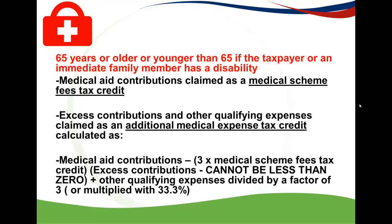Remember, your excess can never be less than zero — it will always be a positive figure because the word says it: excess. To that excess, you're going to add your other qualifying expenses, which you'll either multiply by 33.3% or divide by a factor of 3.